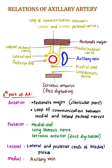The medial cord lies posterior to the first part of the axillary artery. Posterior relations: medial cord, long thoracic nerve, serratus anterior, and first digitation. Anteriorly, there is pectoralis major and the loop of connection between the lateral and medial pectoral nerves.